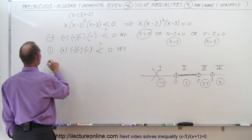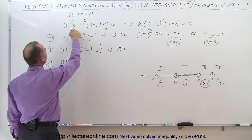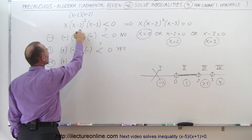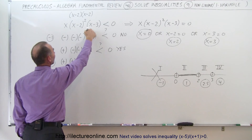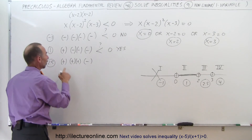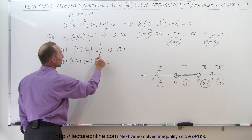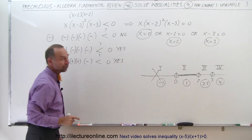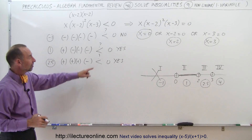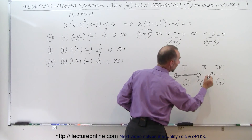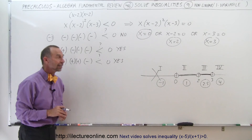For the third test point, 2.5 in Region 3: plugging it into X gives a positive number. Plugging into (X minus 2) gives 2.5 minus 2, a positive number, counted twice because it's squared. Plugging into (X minus 3) gives a negative number. A positive times a positive times a positive times a negative gives a negative result — less than zero. So it does satisfy the inequality, meaning all points between 2 and 3 are part of the solution.